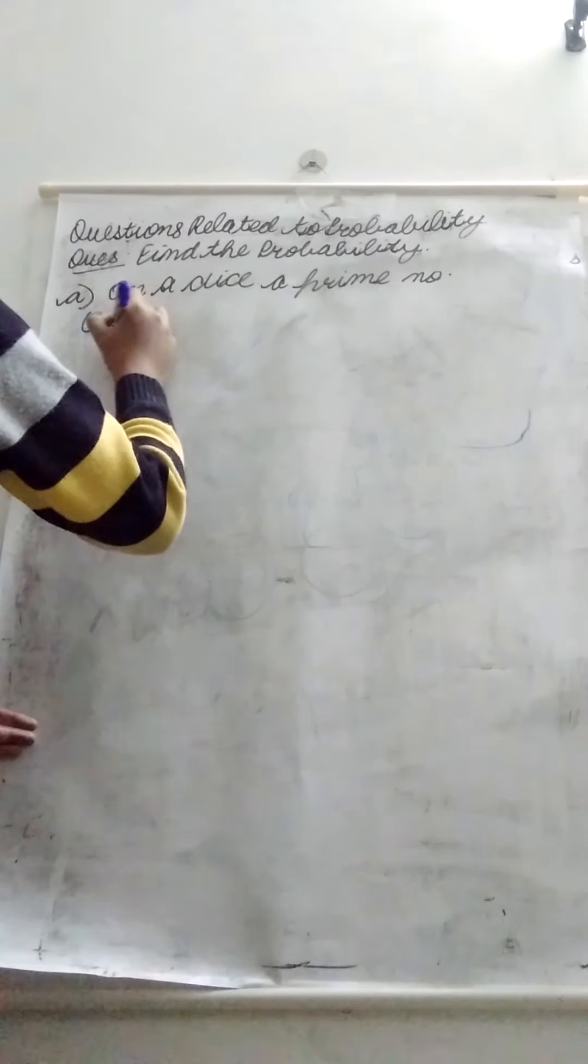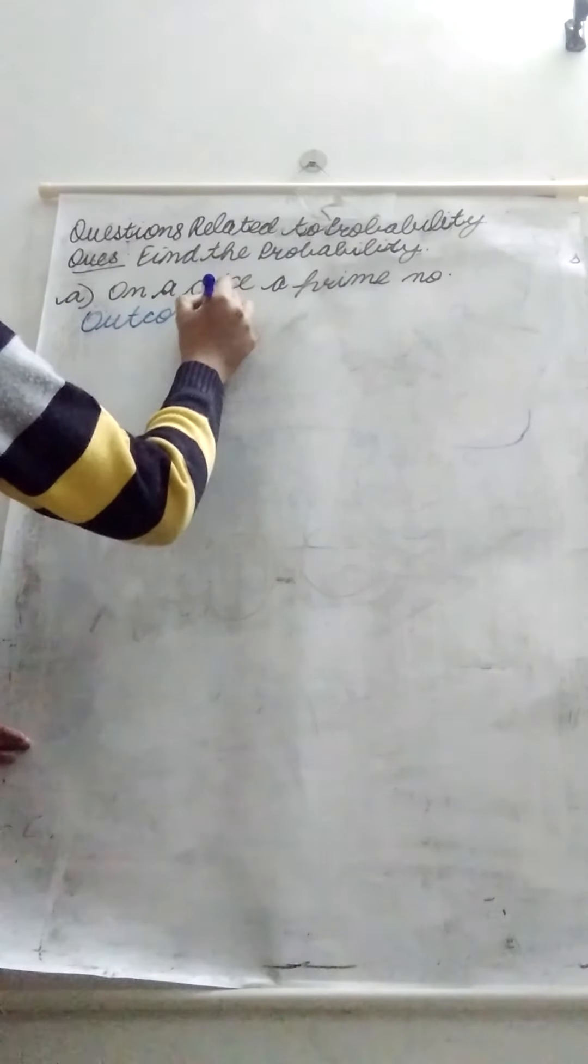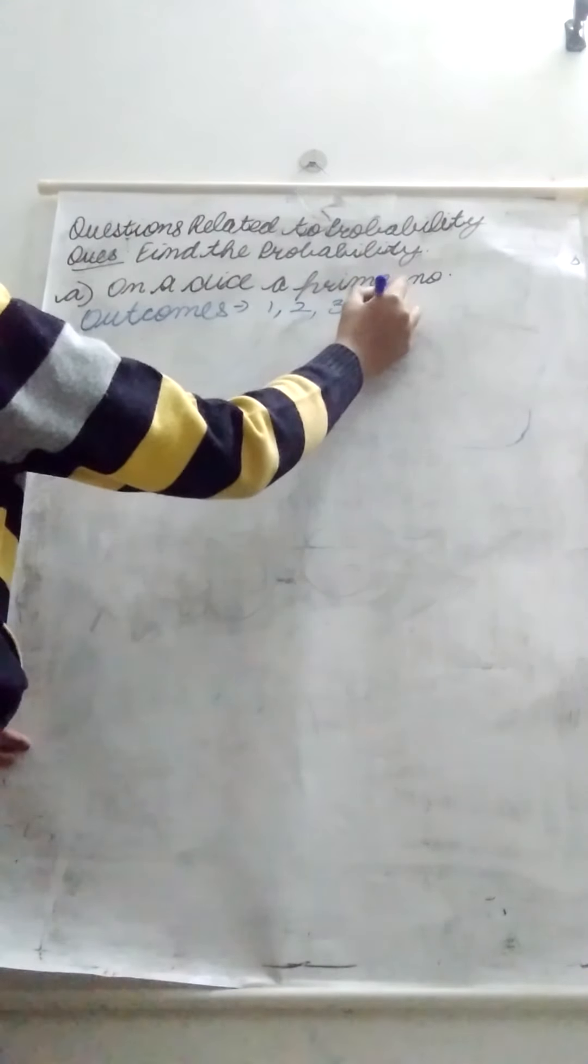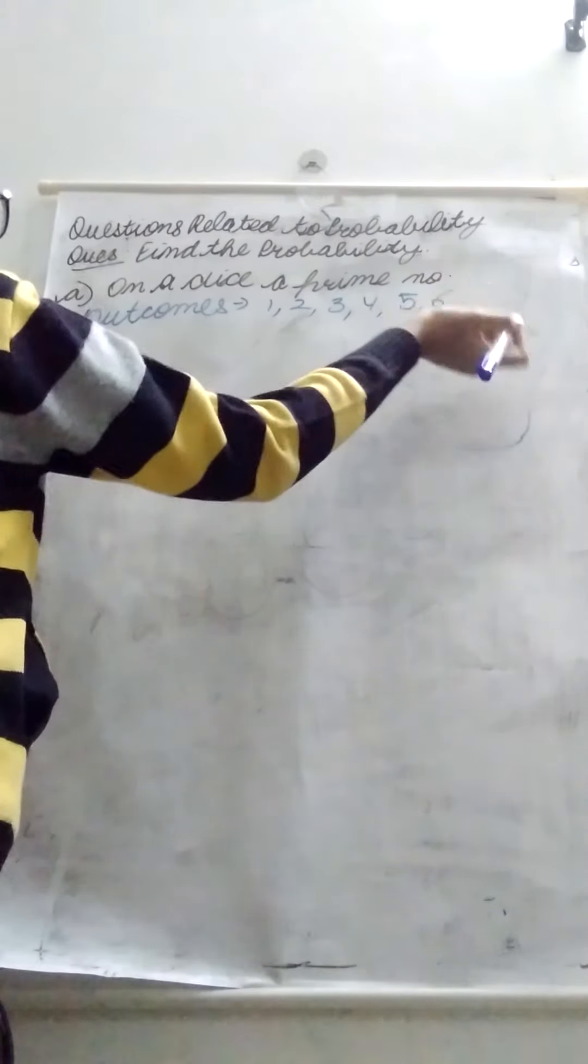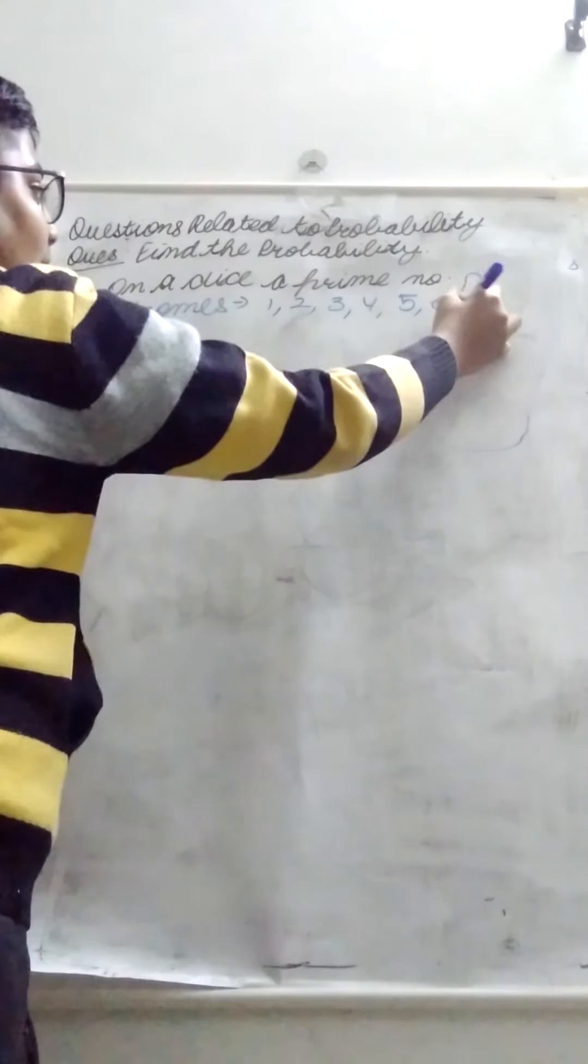On dice, a prime number. First of all, what do we have to do? As many outcomes in this event, we have to write. Outcomes in a dice are as follows: 1, 2, 3, 4, 5 and 6. Total number of outcomes are 6.